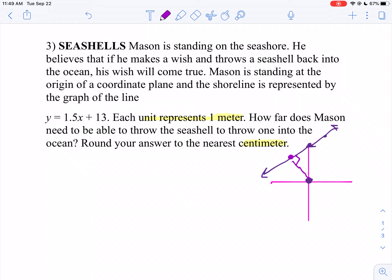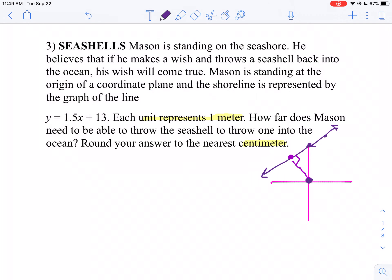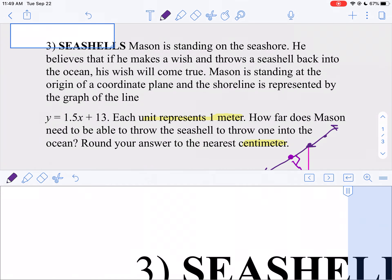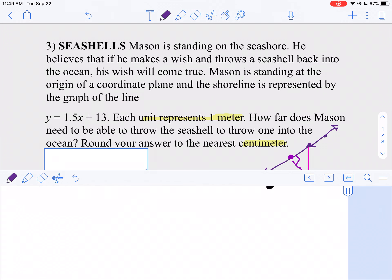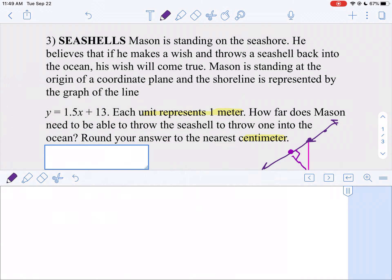First off, let's take our original line, which is y equals 1.5x plus 13, and let's rewrite that. Instead of 1.5, let's write that as a fraction. So it'll be y equals 3 over 2x plus 13.